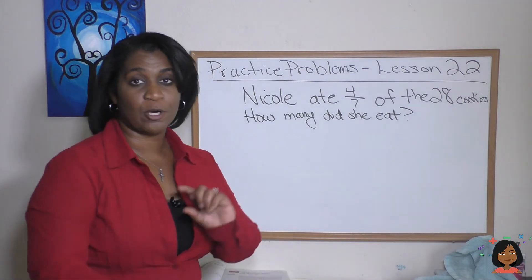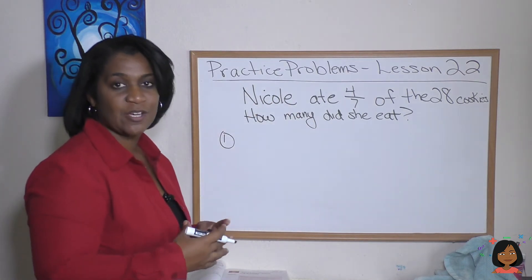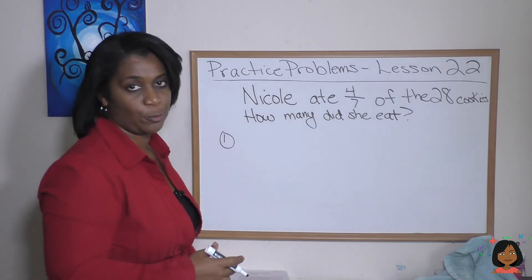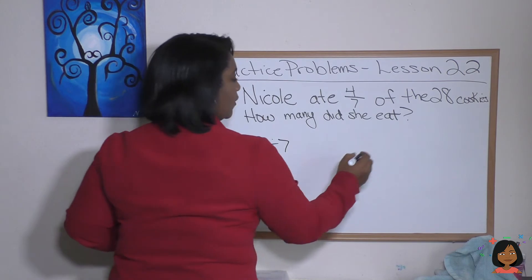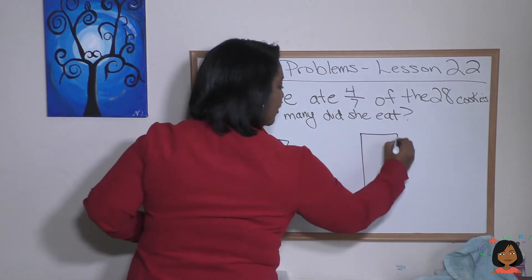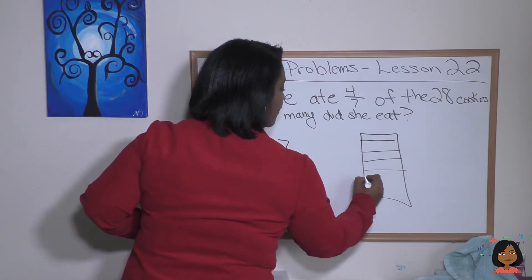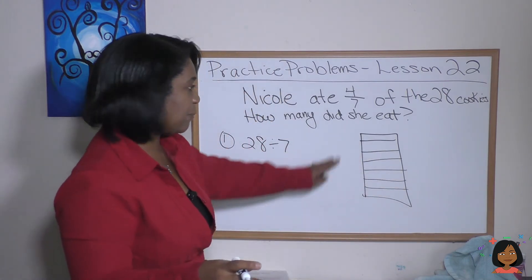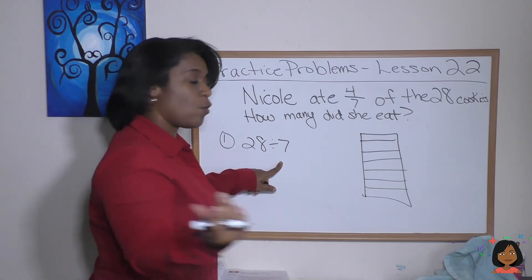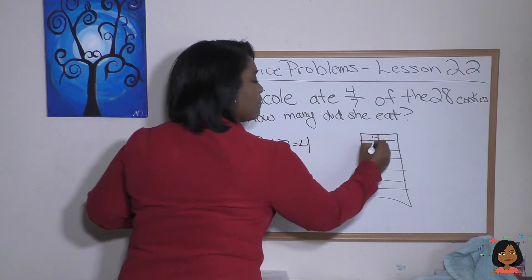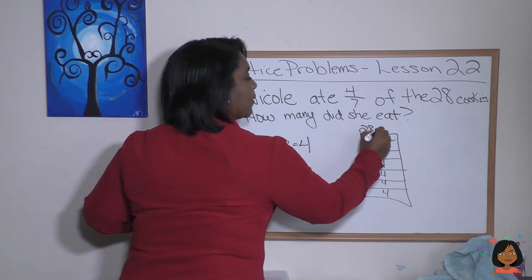Here's how we do this problem. Remember, two steps. Step one: divide up my 28 cookies into seven groups, my denominator. 28 divided by 7. So I'm gonna draw my little diagram here and I'm gonna do seven groups: one, two, three, four, five, six, seven. 28 divided by 7 equals 4. Nice. So each one of my groups has four cookies in it. I'm gonna put 28 up here so I don't forget. That's step one.